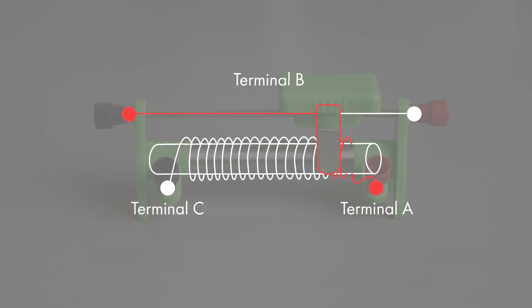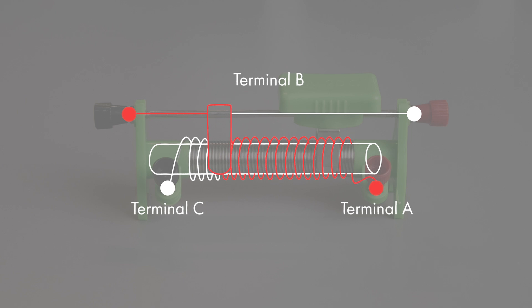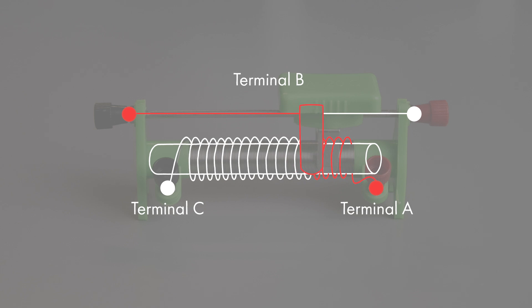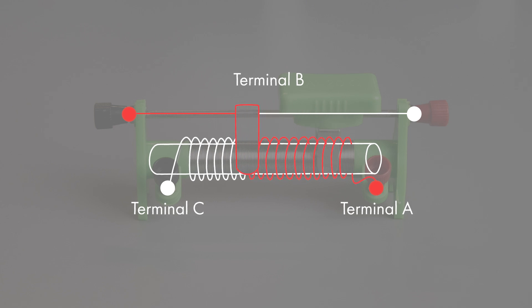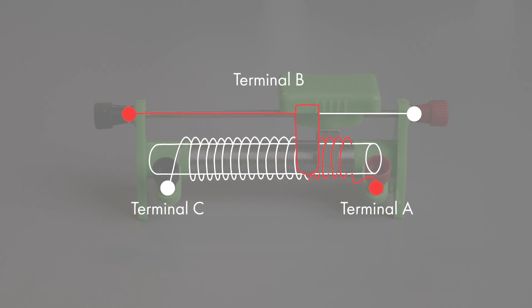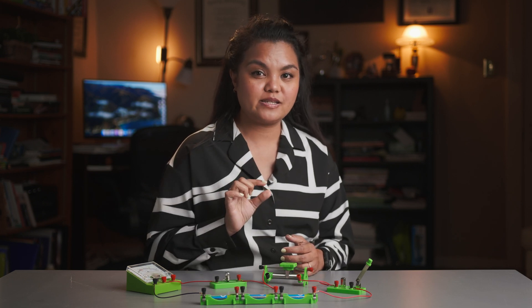The wiper, or terminal B, that moves along the track varies the resistance of the rheostat. The resistance changes when the slider is moved over the resistive path, because the current flows through more or less of the resistive element depending on the position of the slider. By placing the rheostat in the electrical circuit, we can control, increase, or decrease the flow of electric current.